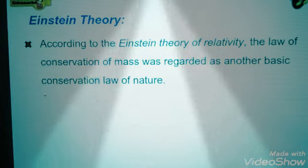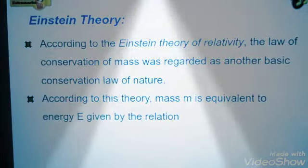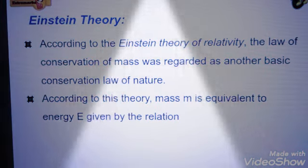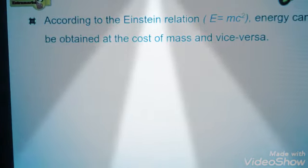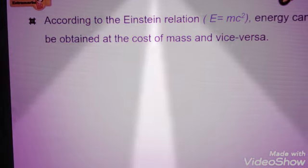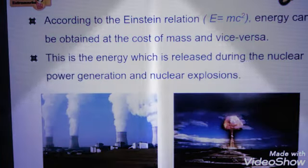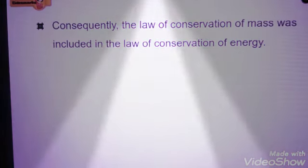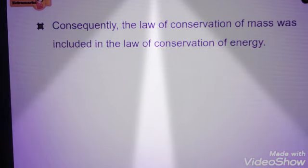According to Einstein's theory, mass M is equivalent to energy E given by the relation E is equal to MC square. Where C, according to the Einstein relation, energy can be obtained at the cost of mass and vice versa. Consequently, the law of conservation of mass was included in the law of conservation of energy.